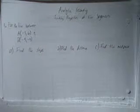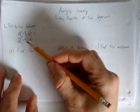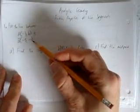For this video, we're going to look at finding properties of line segments. In particular, for the line between A is negative 3, 6, and B is negative 5, negative 4, let's find the slope, find the distance, and find the midpoint.